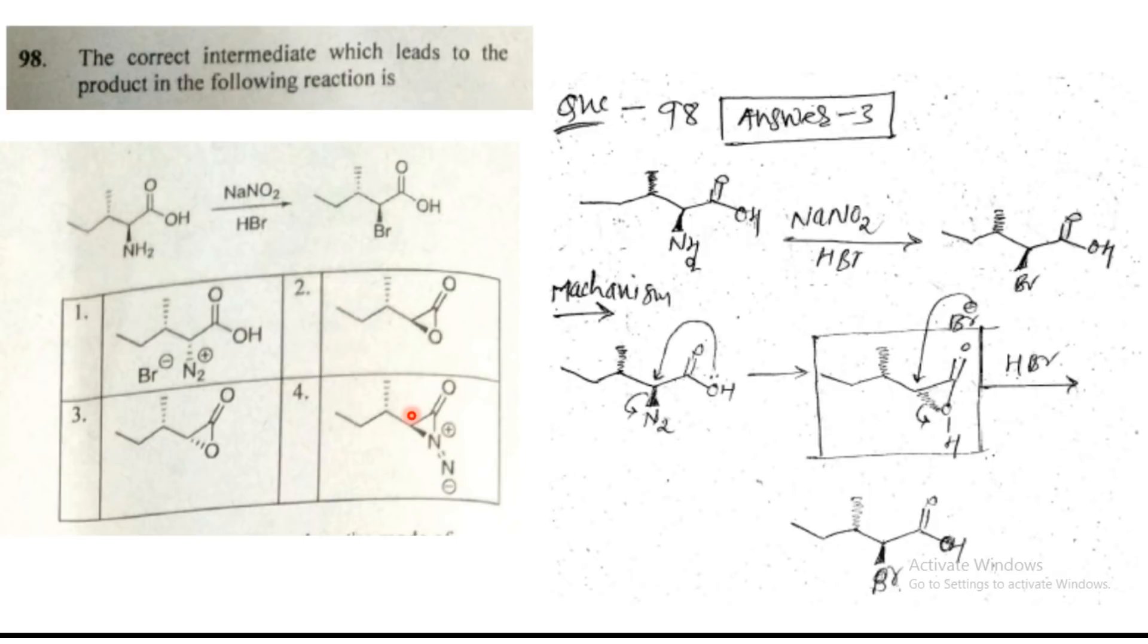So third one should be the answer. And after that, bromine, Br minus, will attack from the opposite side and we will be getting retention of stereochemistry as per this NH2. So this should be the answer. So third one is the correct answer for this one. Thank you guys.